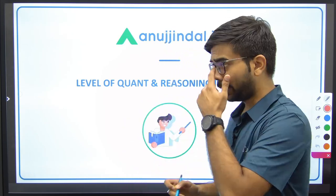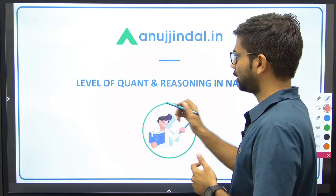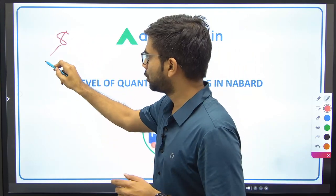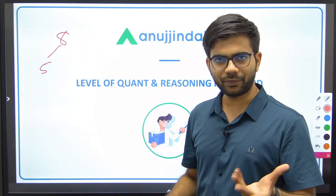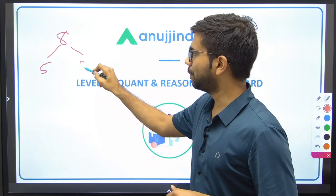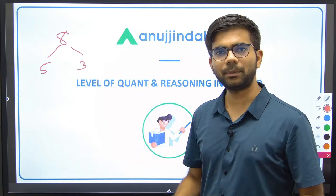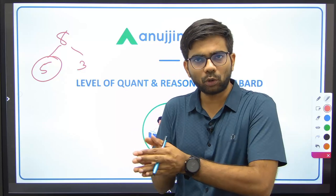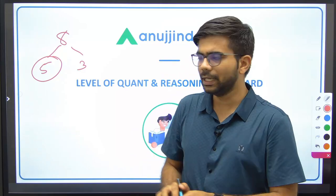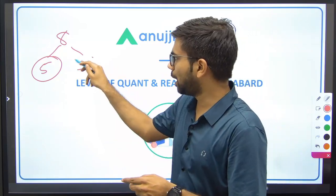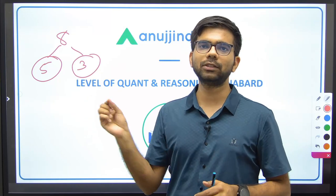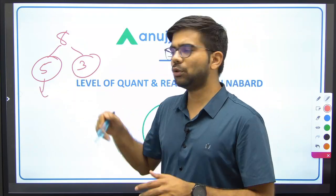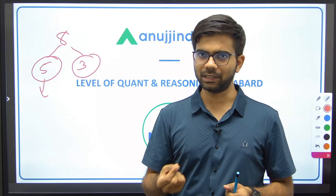As you know, in Phase 1 there are a total of 8 subjects, of which 5 are qualifying in nature and the remaining 3 are merit-based. So your total score is not counted in those 5 subjects, and only the 3 merit-based subjects are counted. In these 5 qualifying subjects, you only need to clear the sectional cut-off.